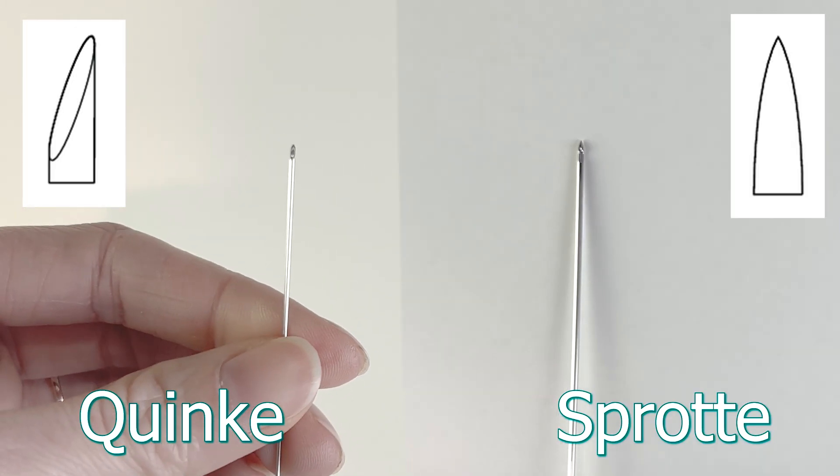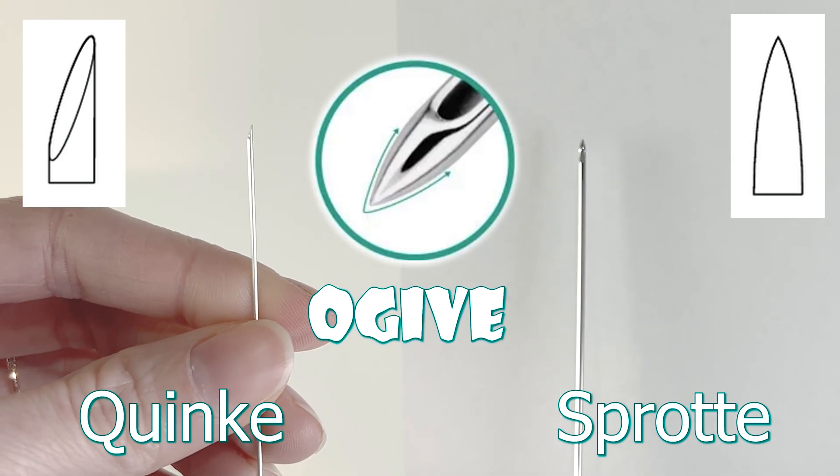Unlike the sharp tip of a Quinke needle, the Sprott needle has an ojive shape, which is considered atraumatic.